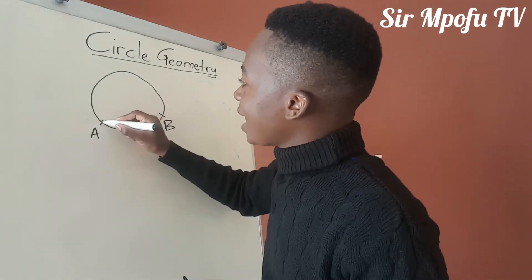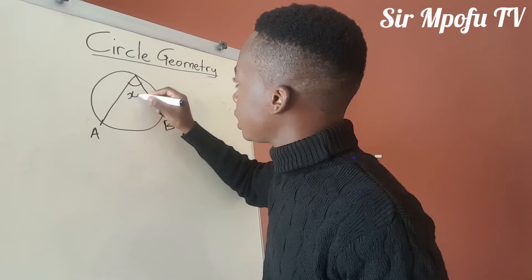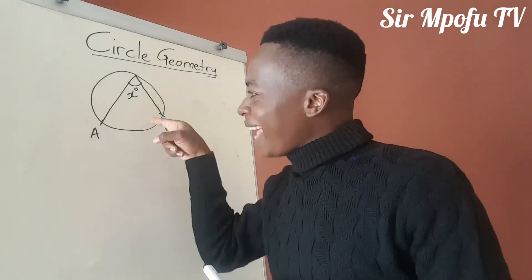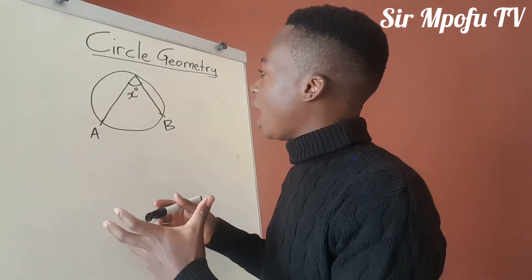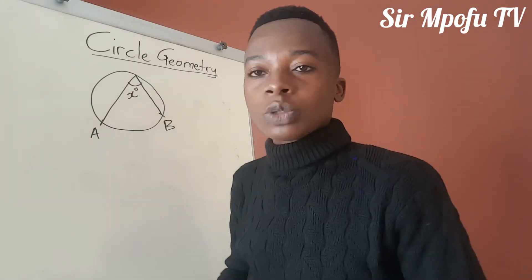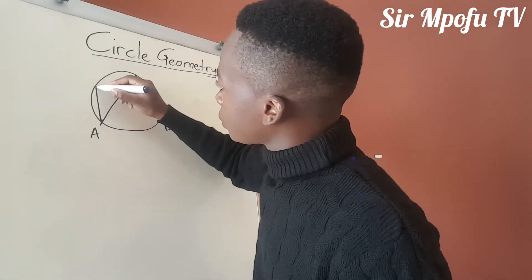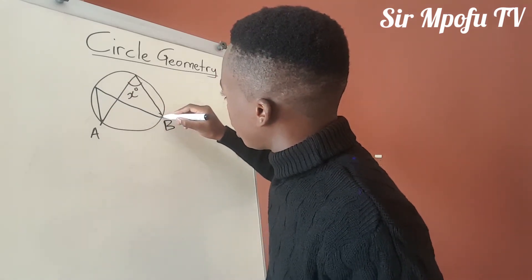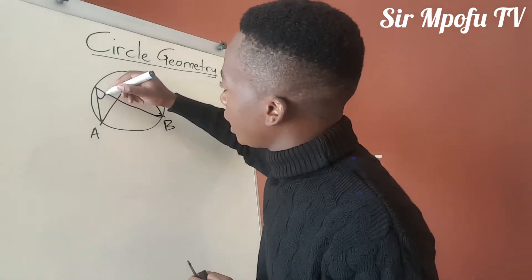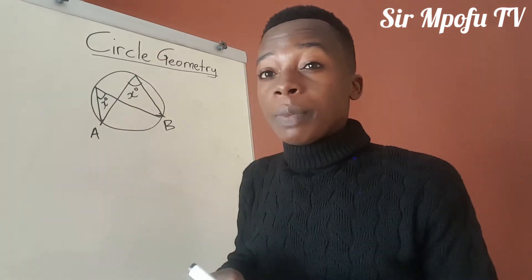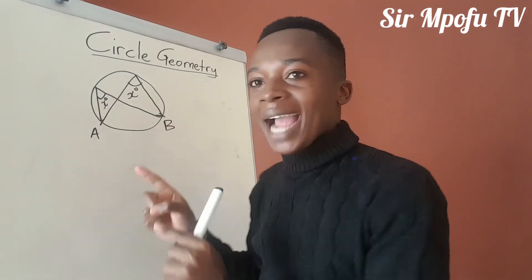Let me show you what I mean. Let's say arc AB subtends an angle here — I'm going to call it x degrees. If this same arc subtends another angle at the circumference, that angle is going to be x degrees as well. 'Subtend' just means 'making' or 'creating' an angle. So if this is 60 degrees, the other angle subtended by the same arc will also be 60 degrees. This theorem is very crucial — angles subtended by the same arc are equal at the circumference.